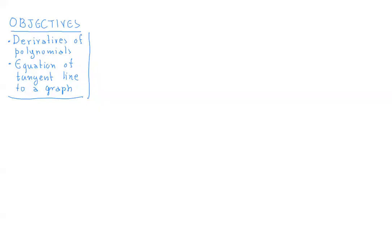We are now going to see how to compute derivatives of polynomials. It turns out that computing derivatives of polynomials is very simple. Let's begin with two general properties of derivatives. First of all, if you have two functions and you want to find the derivative of their sum, you just need to find the derivatives of the individual functions and then add them up. When I denote the derivative of a function f(x) as f'(x) and g'(x), I really mean the derivative at a given number x.